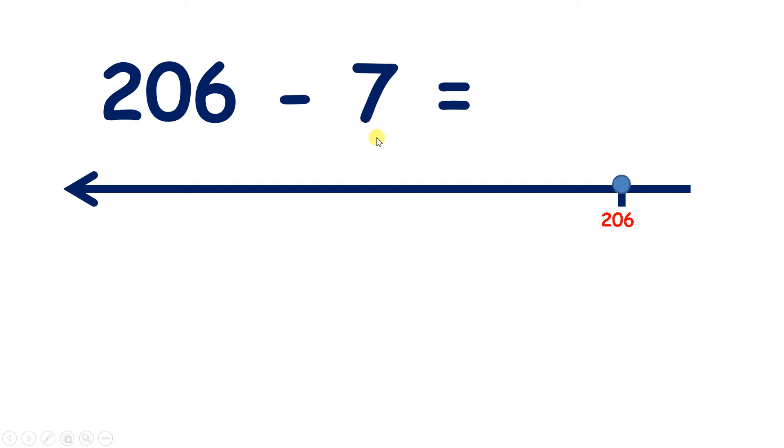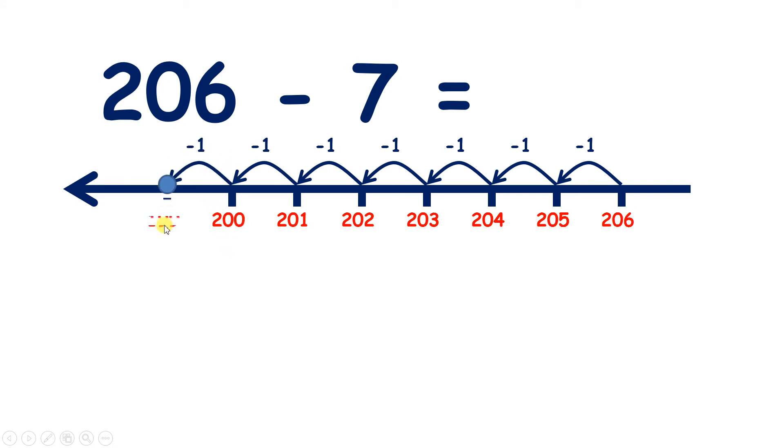So if we count back 7 from 206, we get 205, 204, 203, 202, 201, 200, and 199. So 206 take away 7 equals 199.